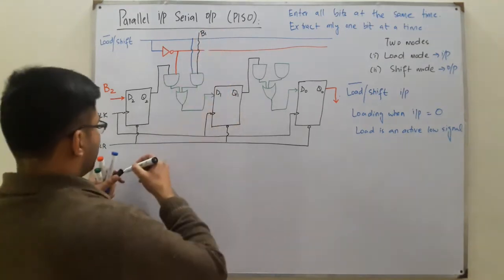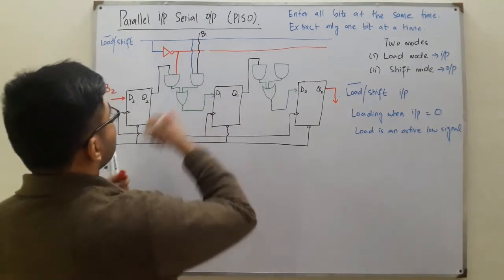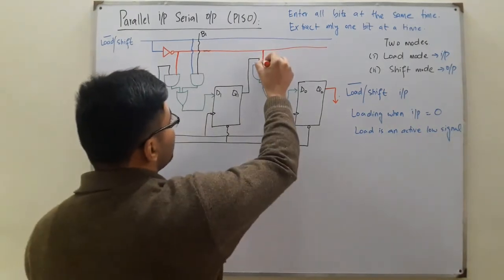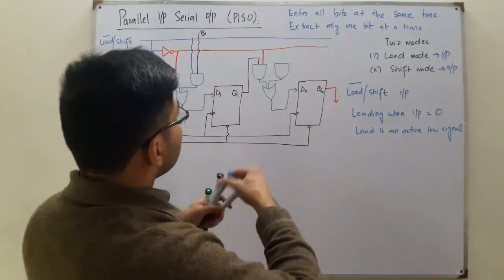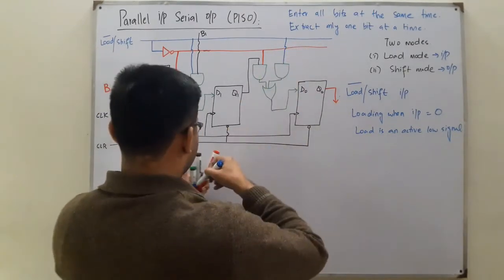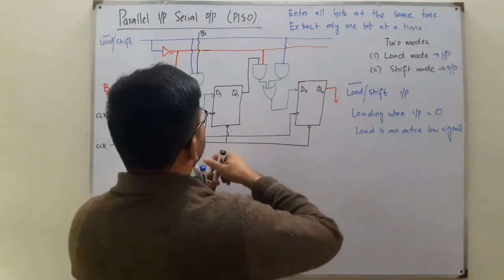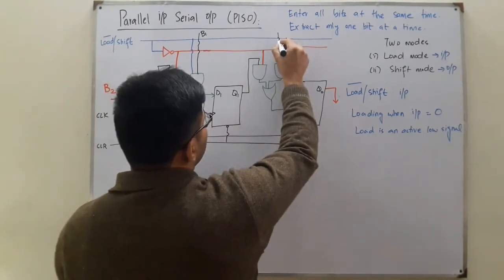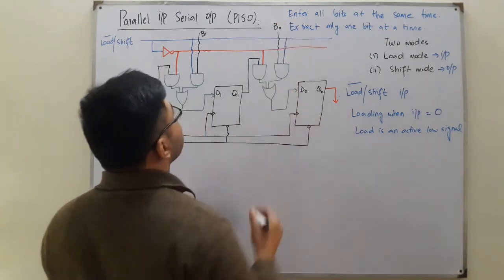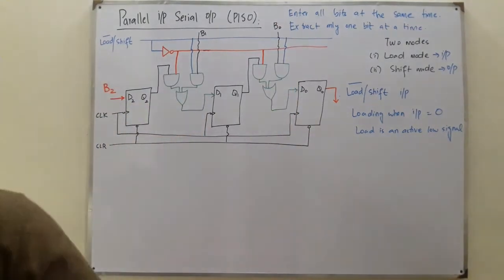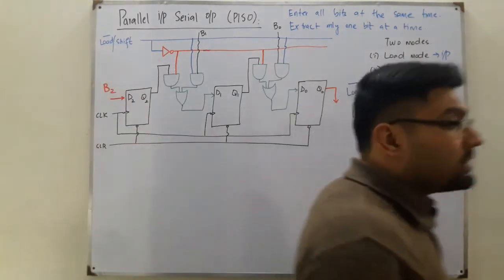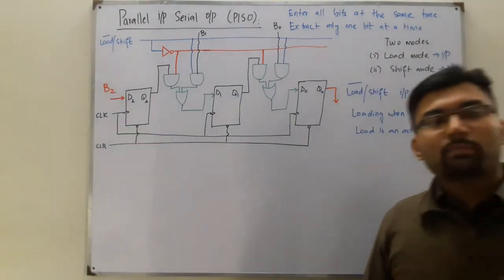Similarly, to the next pair of gates the complemented form is given to one AND gate and the normal signal with B0 is given to the other AND gate. To store something we need to input it, and for parallel input we use the load mode.